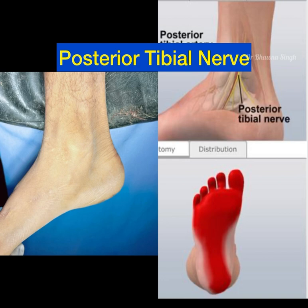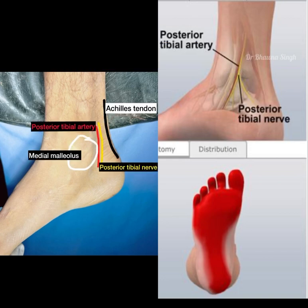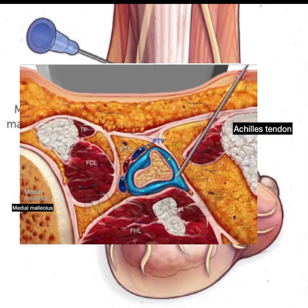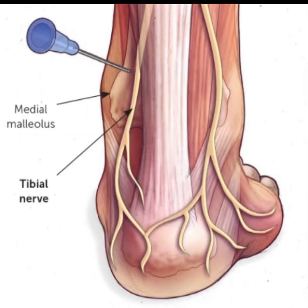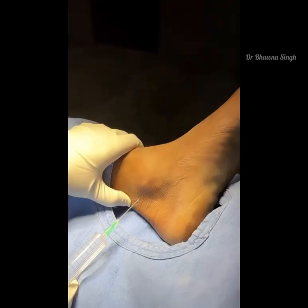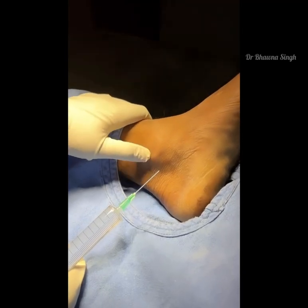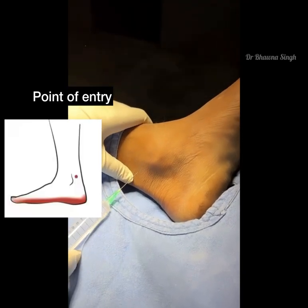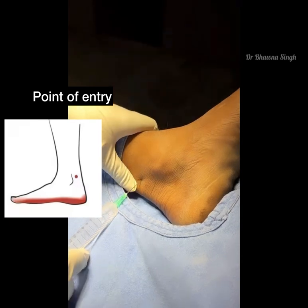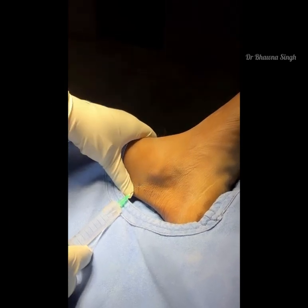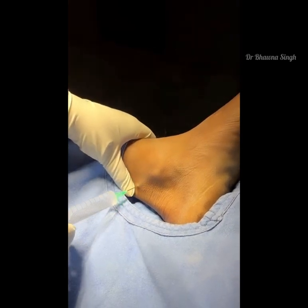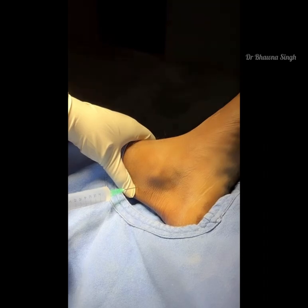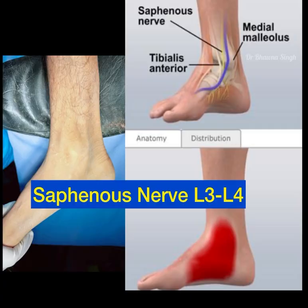For the posterior tibial nerve block: the posterior tibial nerve runs posterior to the posterior tibial artery, in between the medial malleolus and the Achilles tendon. Insert the needle at 60 degrees to the skin, posterior to the artery, which is between the malleolus and the tendon — one centimeter depth and one centimeter superior to this point — and inject five milliliters of local anesthetic.